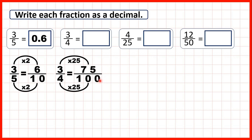Remember, that denominator of a hundred tells us that we can't go past the hundredths place value column. So we need to write seventy-five hundredths as zero point seven five — the seven gets shifted over into the tenths because we can't go past the hundredths column. The second digit after the decimal point is the hundredths, so we can only have two digits after the decimal point if we have a denominator of one hundred.